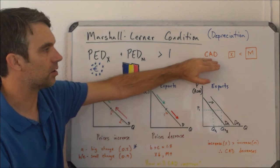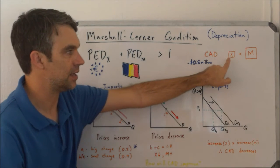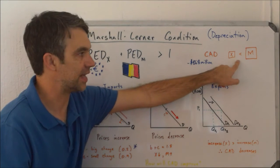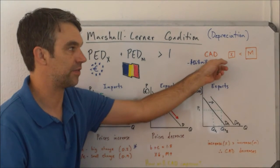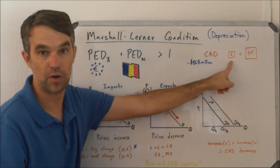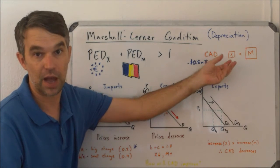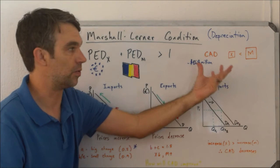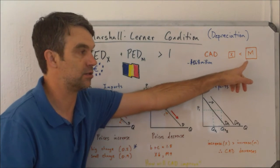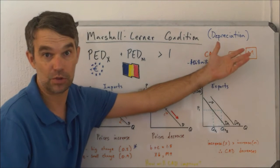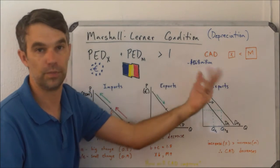Keep in mind: when we look at the current account, if we have a current account deficit, it means the value of exports is less than the value of imports. So a reduction of the current account deficit would mean that X needs to grow, M needs to shrink, or probably some combination of the two — so that the difference between the size of X and the size of M becomes less.